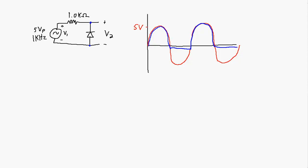The diode is forward biased, so it's 0.7 volts across it, and we're going to get this repeating over and over again. It has basically cut off most of the negative part of the cycle.